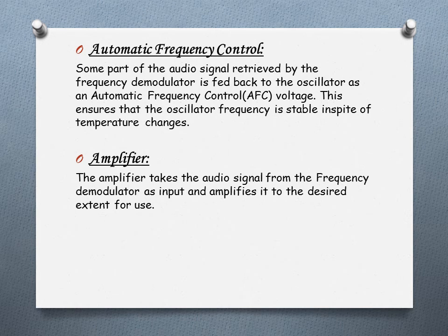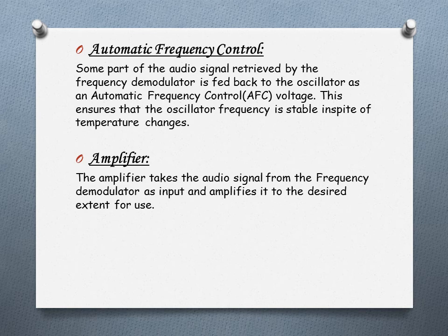The automatic frequency control (AFC) works as follows: some part of the audio signal produced by the frequency demodulator is fed back to the oscillator as an AFC voltage. This ensures that the oscillator frequency remains stable in spite of temperature changes. The AFC circuit develops an error voltage proportional to the degree to which the receiver is mistuned, and this error voltage is fed back to the tuning circuit to reduce the tuning error. This acts as a negative feedback.